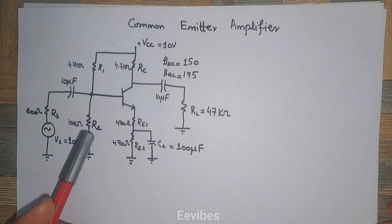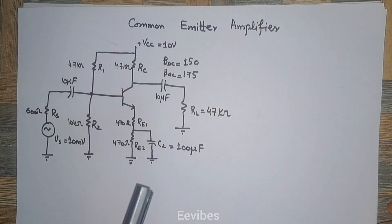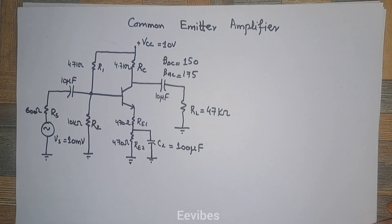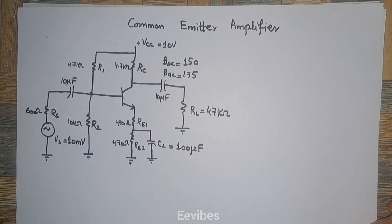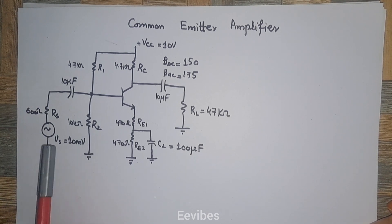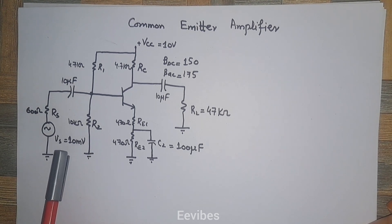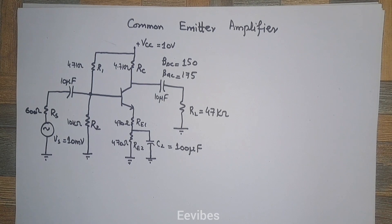In this lecture, we will perform the DC and AC analysis of the common emitter amplifier and finally we will see how much gain is provided by this amplifier circuit. The input signal is in millivolts, equal to 20 millivolts, and we will do this DC and AC analysis to see how much amplification is at the output.